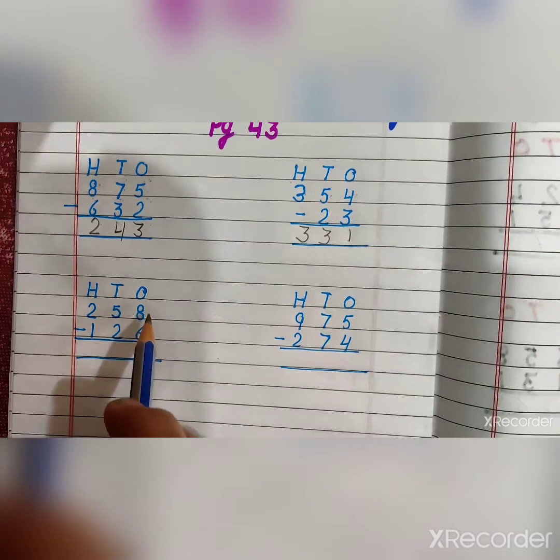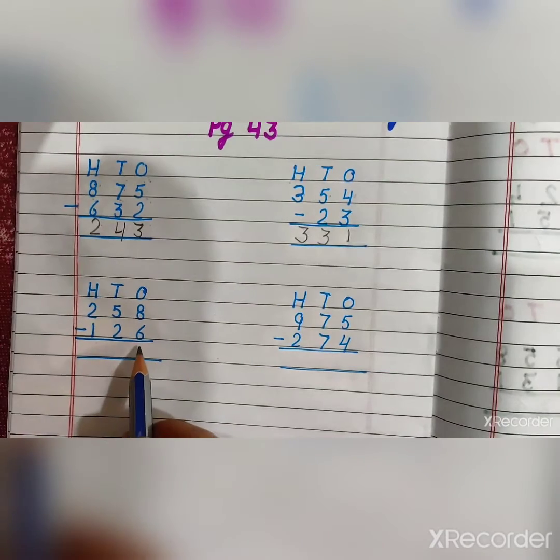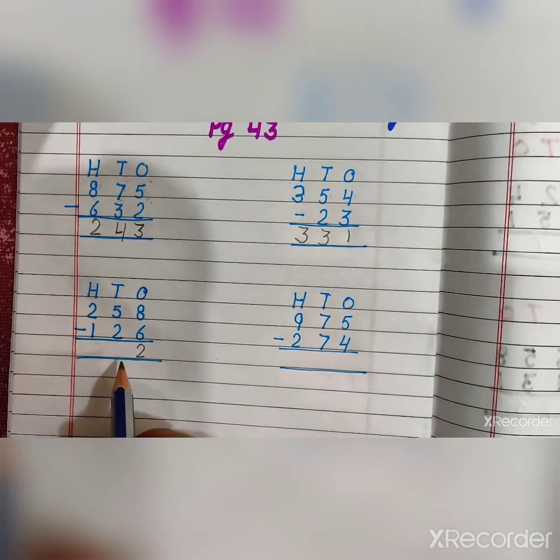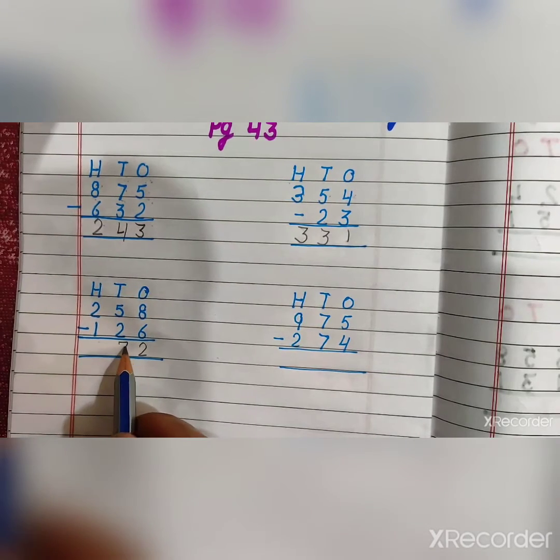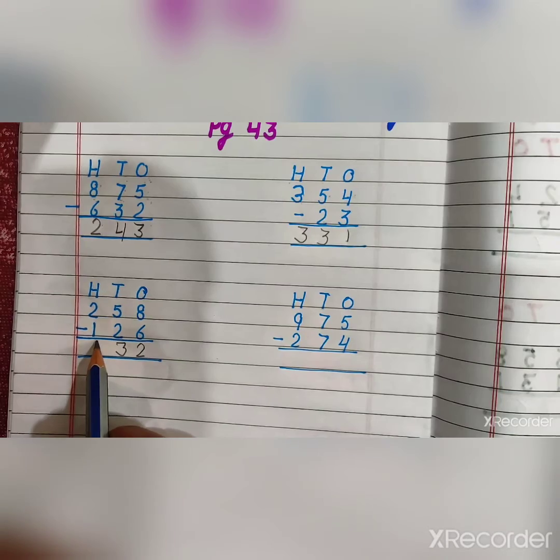Now we will start with one's place. 8 minus 6 is equal to 2. And 5 minus 2 is equal to 3.